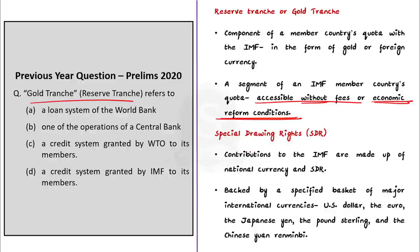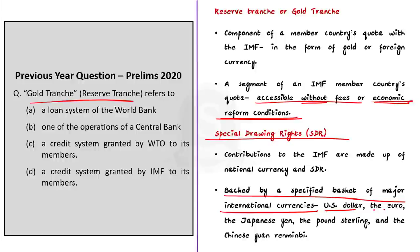The contributions of IMF are made up of a combination of national currency and Special Drawing Rights. Special Drawing Rights were also asked in previous year questions, so you should know about SDRs. The IMF denominates its members' quotas in terms of SDRs, an IMF creation backed by a specified basket of major international currencies. As of February 2021, the basket included the US dollar, the euro, the Japanese yen, pound sterling, and the Chinese yuan or renminbi. The Chinese yuan is the latest addition, and together the dollar and euro make up about 70% of the basket's value.